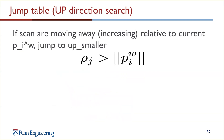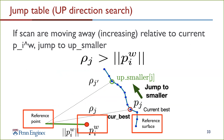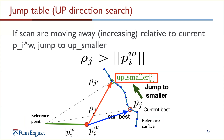The way you use the jump table depends on which direction you are moving. In the up direction, if the scans are moving away — that is, increasing relative to the current p_i^w — then you jump to the index stored in up-smaller. The orientation of the transform point relative to the reference point and reference surface means that rather than searching sequentially from the current best point p_j, a better candidate matching point when searching upward will be the point at the up-smaller index. Any other point in between will only have a larger distance to p_i^w.